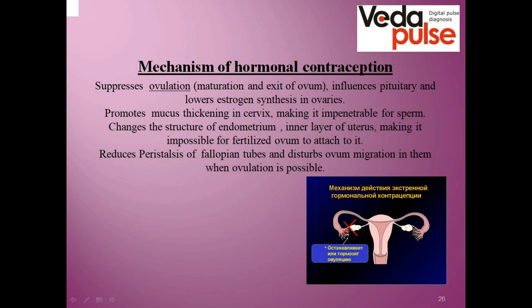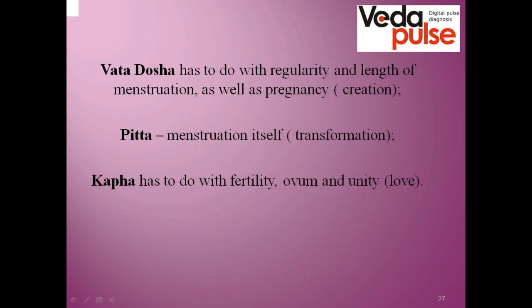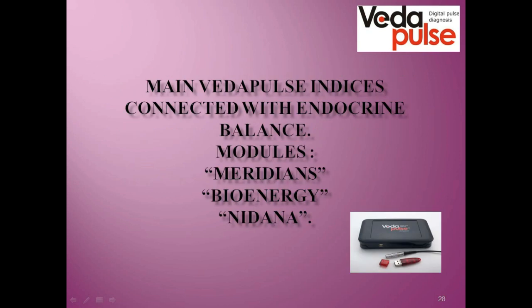Now let's switch to Ayurvedic aspects connected with the menstrual cycle. Vata dosha has to do with the regularity and length of menstruation, as well as pregnancy and creation of life. It is also the cyclicity of hypothalamus hormones. Pitta indicates the menstruation itself or the transformation period, and Kapha has to do with fertility, the ovum, and unity.